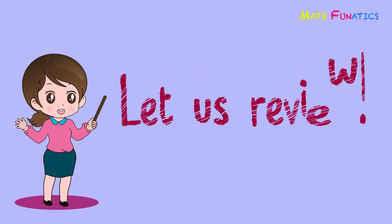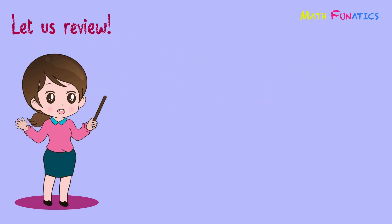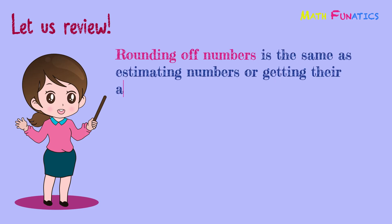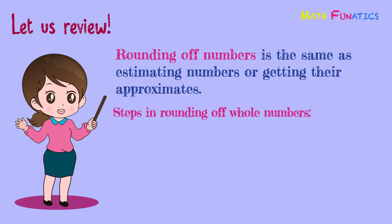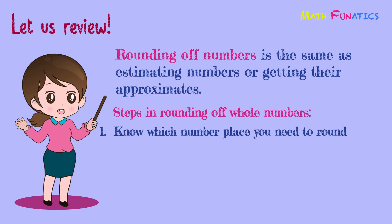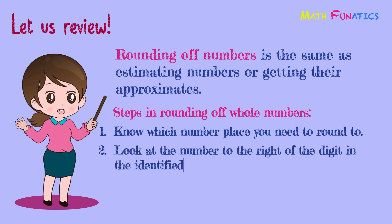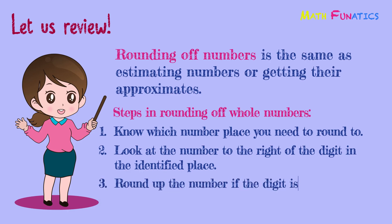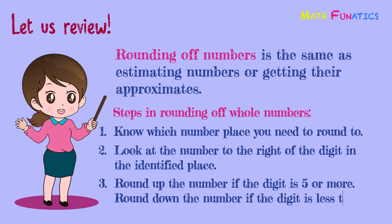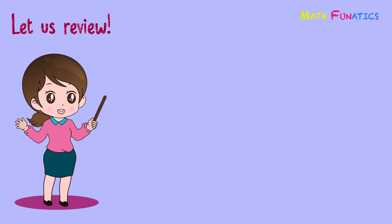Good job, students! Now, let's make a recap of what you've learned today. Rounding off numbers is the same as estimating numbers or getting their approximates. The first step in rounding off whole numbers is to know which number place you need to round to. Second, look at the number to the right of the digit in the identified place. Third, round up the number if the digit is 5 or more, or round down the number if the digit is less than 5.